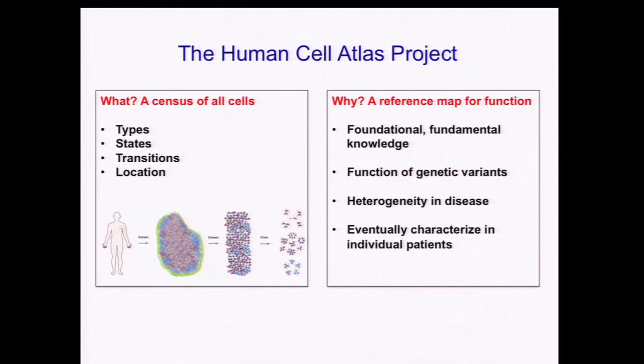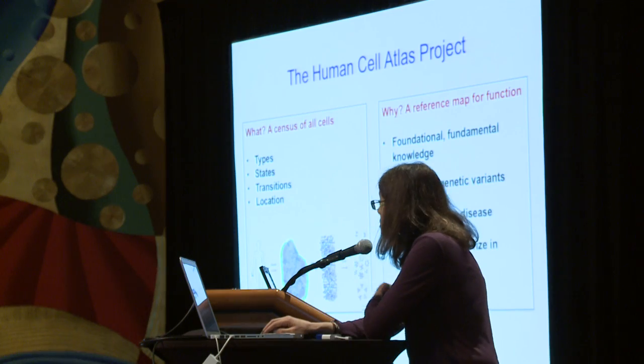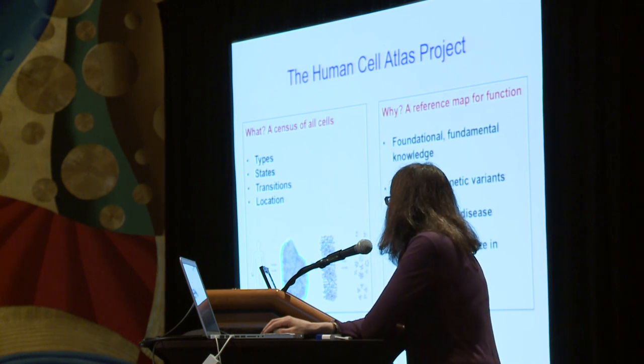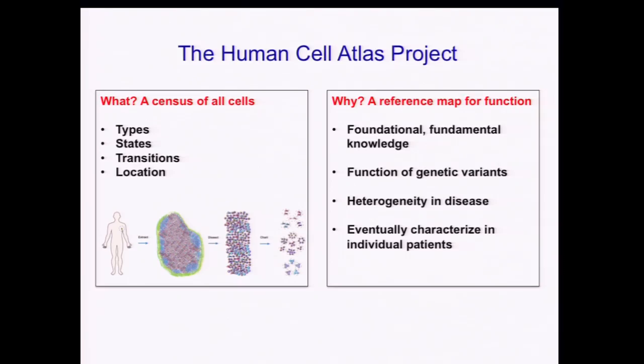First, let me remind you why we would actually want such an atlas. This kind of atlas will be a reference map for all functional studies. It will provide foundational, fundamental knowledge across all biological systems. It will allow us to characterize the function of genetic variants in the relevant cell type, which is what this community cares about deeply. It will allow us to interpret pathology and heterogeneity in disease with respect to an actual reference of normal, and it should eventually allow us to characterize this kind of heterogeneity in individual patients.